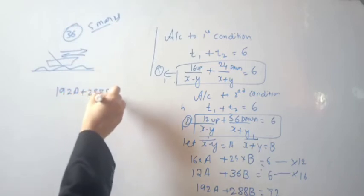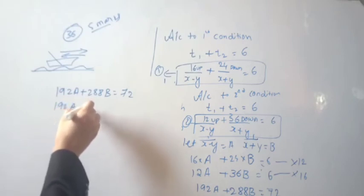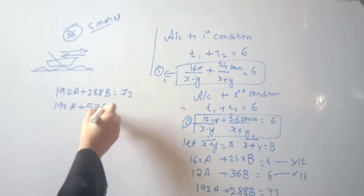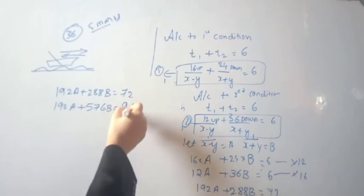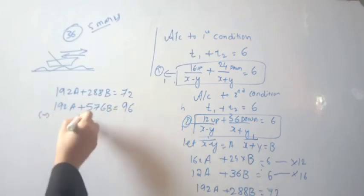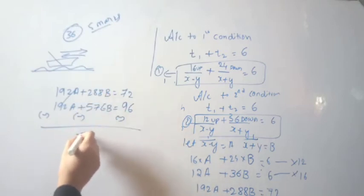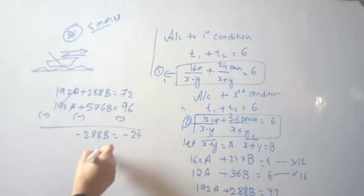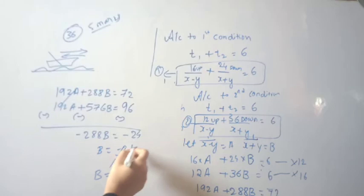After subtracting the first multiplied equation from the second, the 192a terms cancel out. We get 576b minus 288b equals 96 minus 72, which gives 288b equals 24. Therefore b equals 24/288, which simplifies to 1/12.